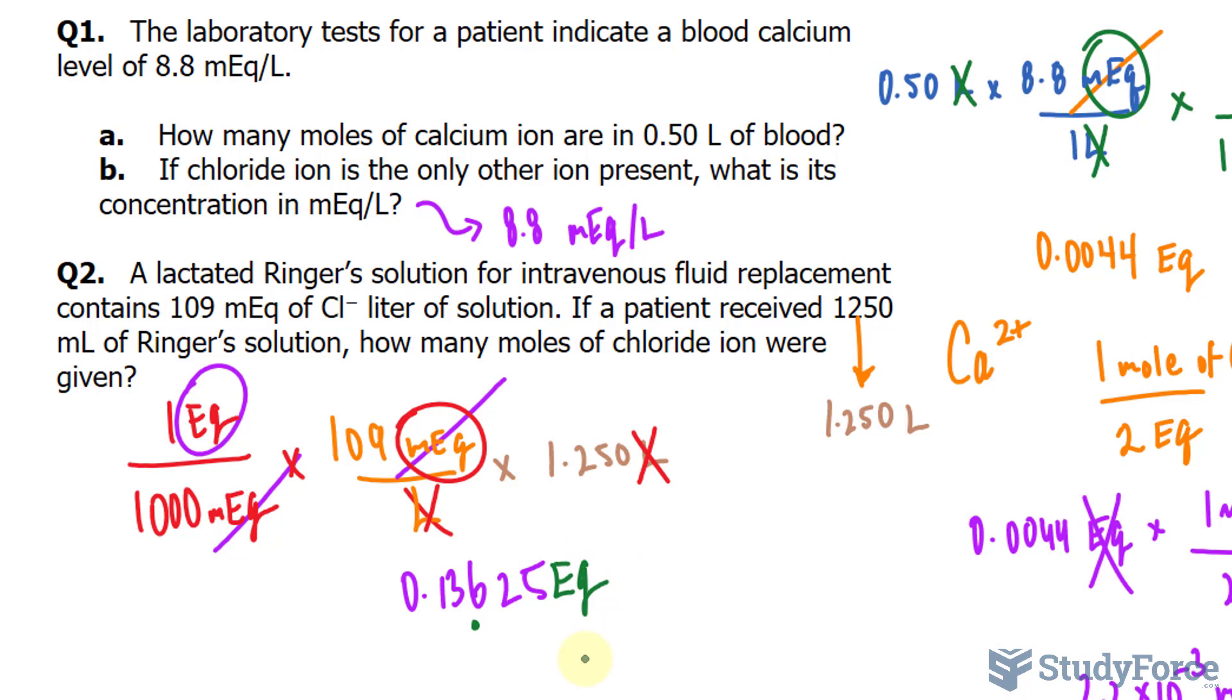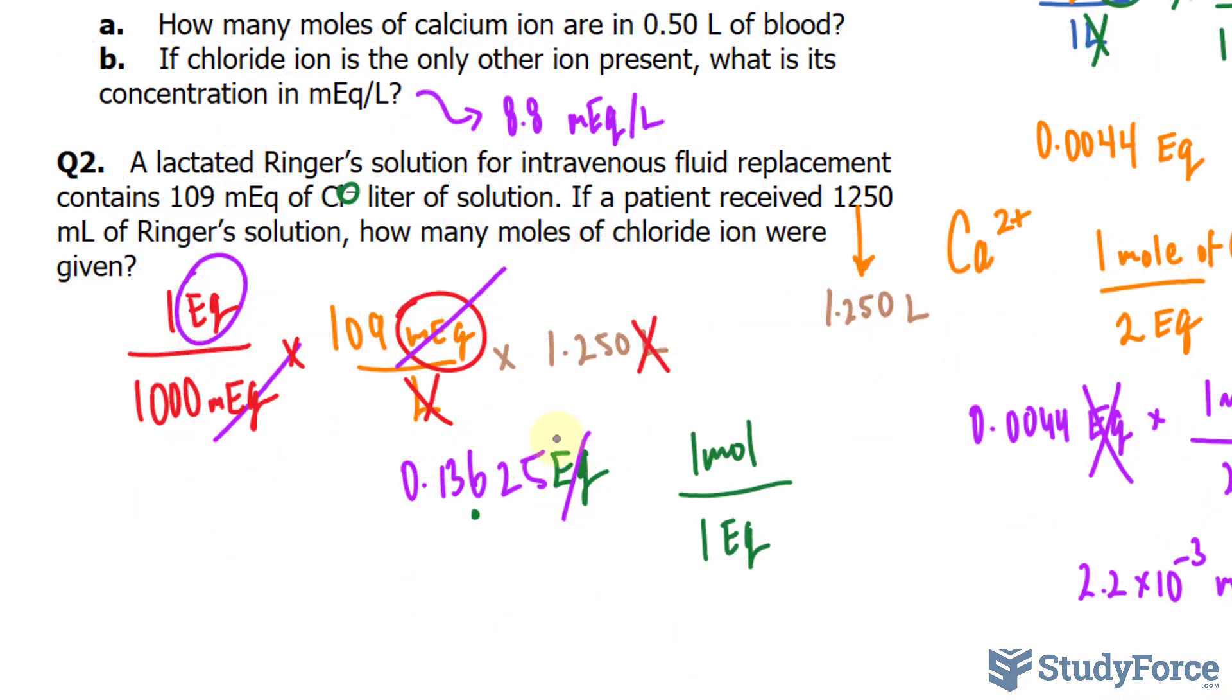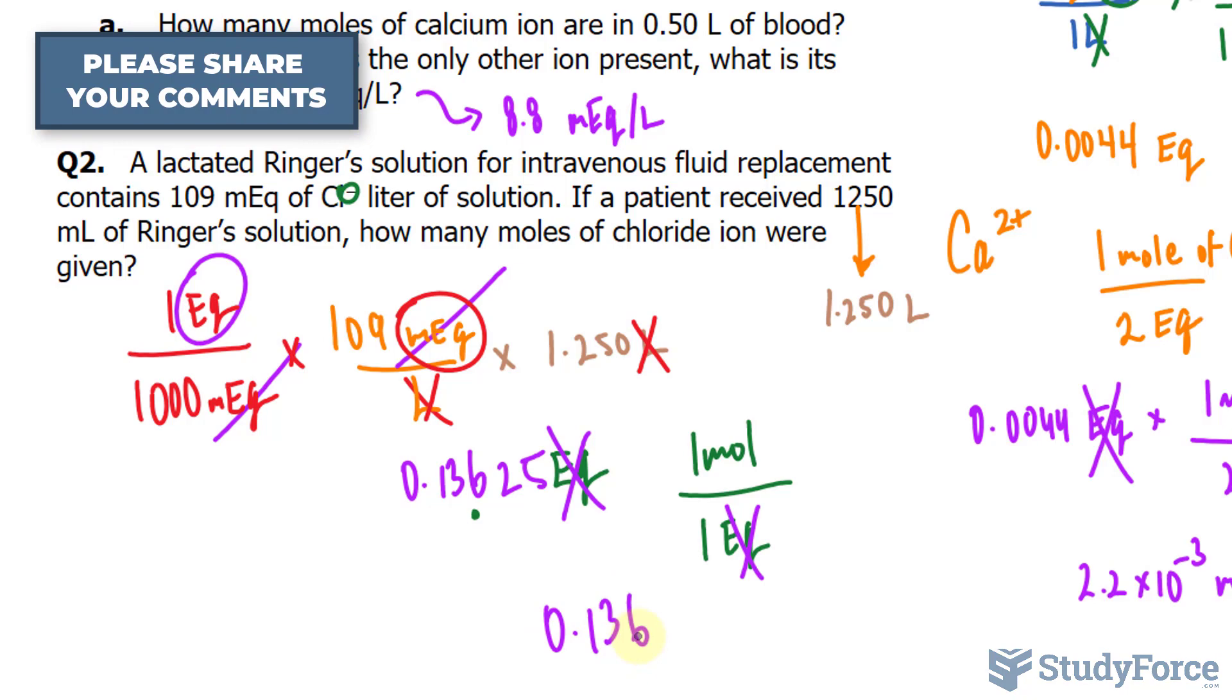They're asking for how many moles. Now, chlorine has a charge of negative one, so it's one mole of chlorine per one equivalent. That cancels out with that, and our answer should be 0.136 moles of chlorine ions, or chloride ions.